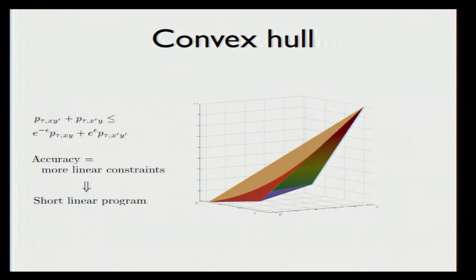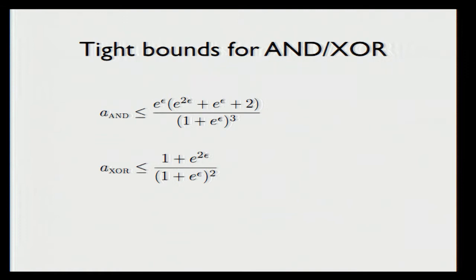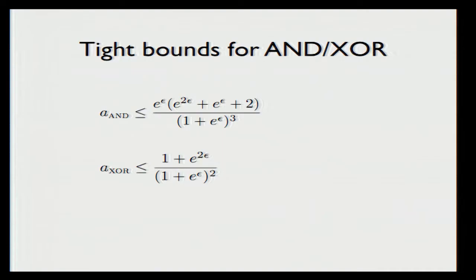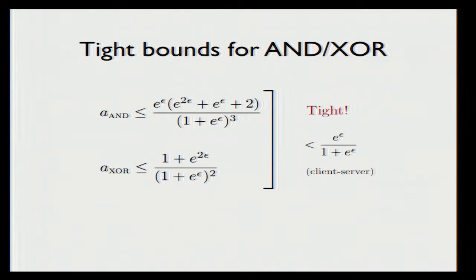We analyzed this program for specific functions such as AND and XOR, and these are the bounds we get. An interesting thing is that in going from a differentially private protocol to writing down the set of linear equations, we have lost a lot of information. But even then, for the case of AND and XOR, these bounds are actually tight — it is easy to come up with a protocol which achieves these bounds. Notice that both of these bounds are actually smaller than the generic differential privacy bound in the client-server setting, and this proves that there is an accuracy gap between the client-server setting and the interactive setting, at least for these two functions.